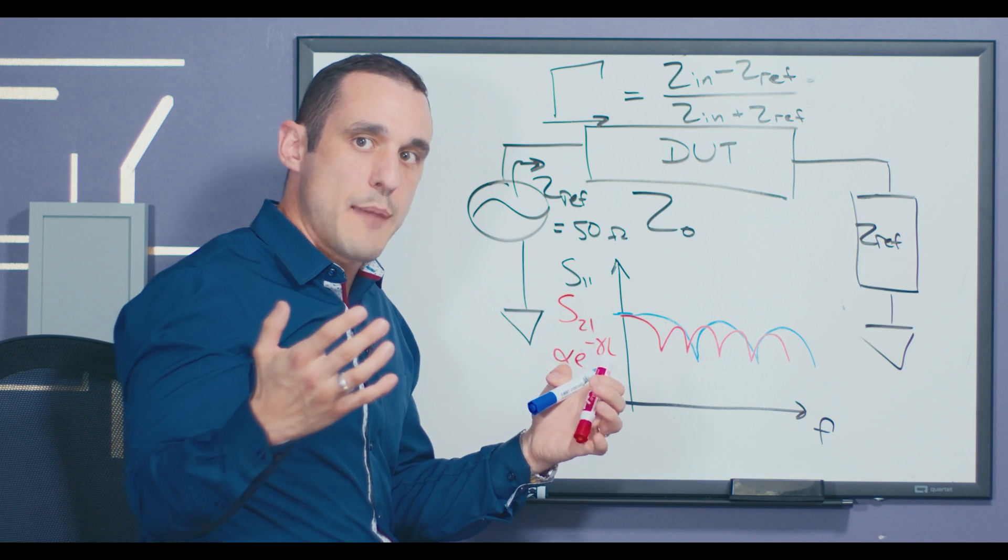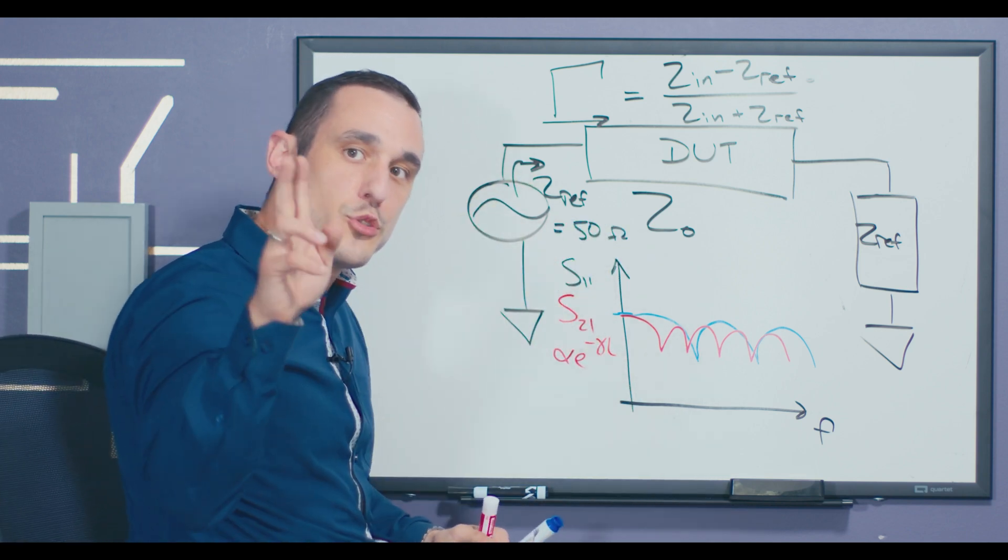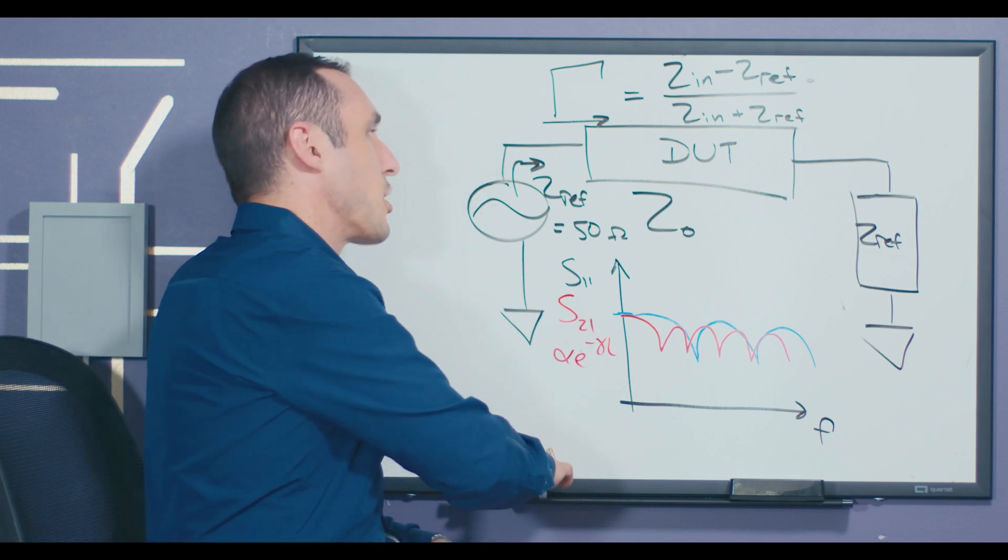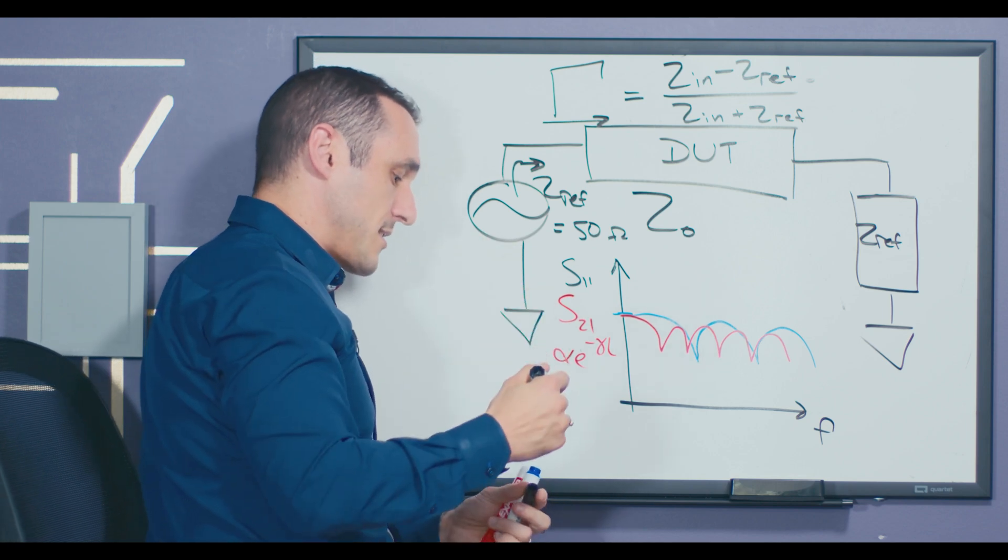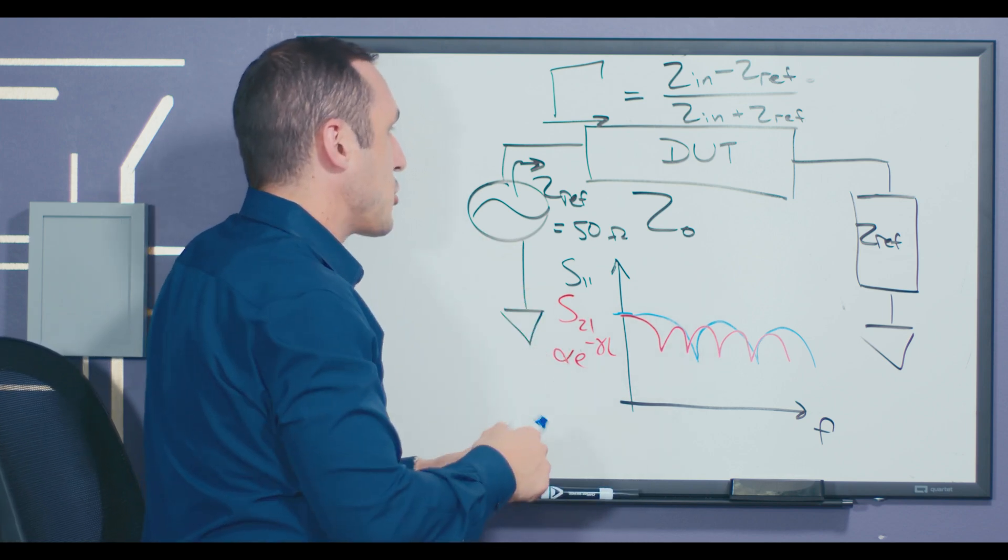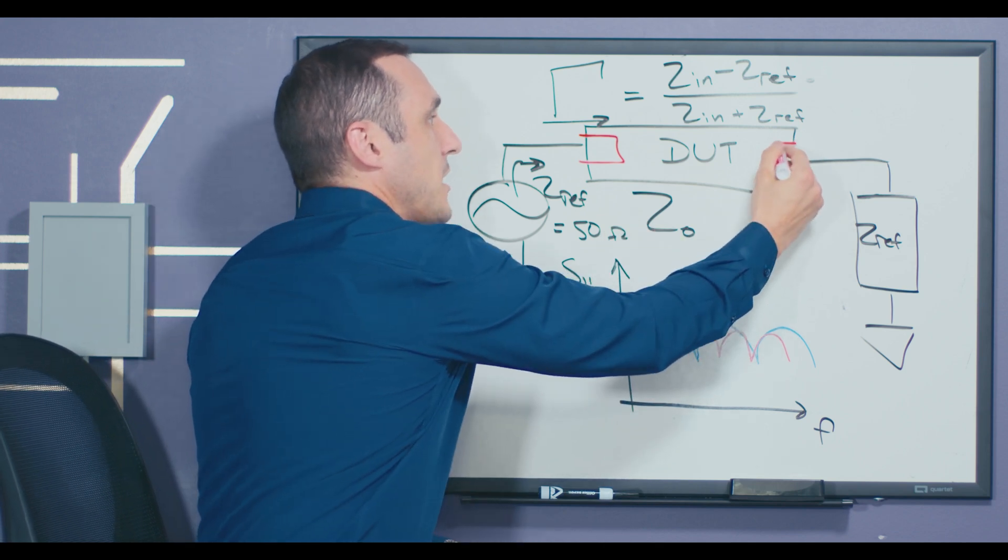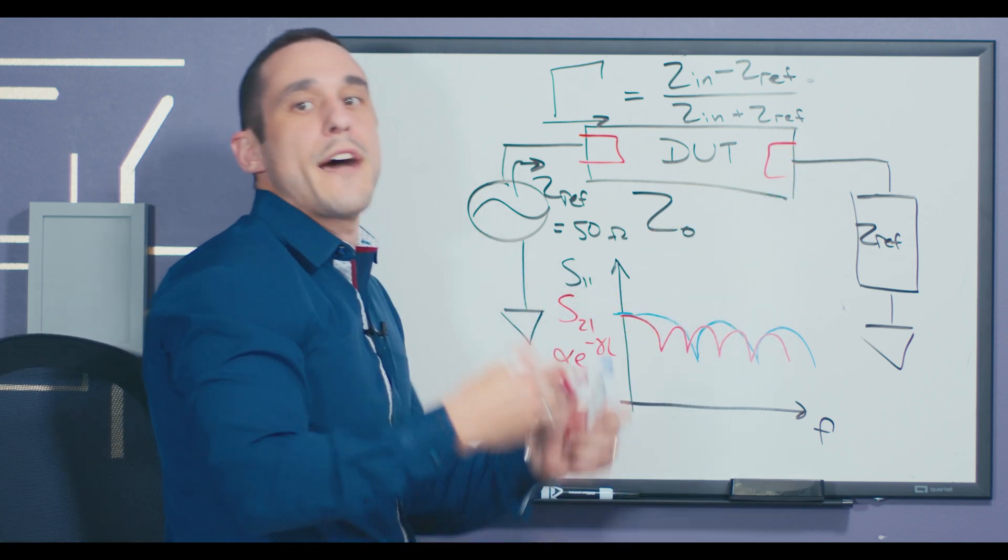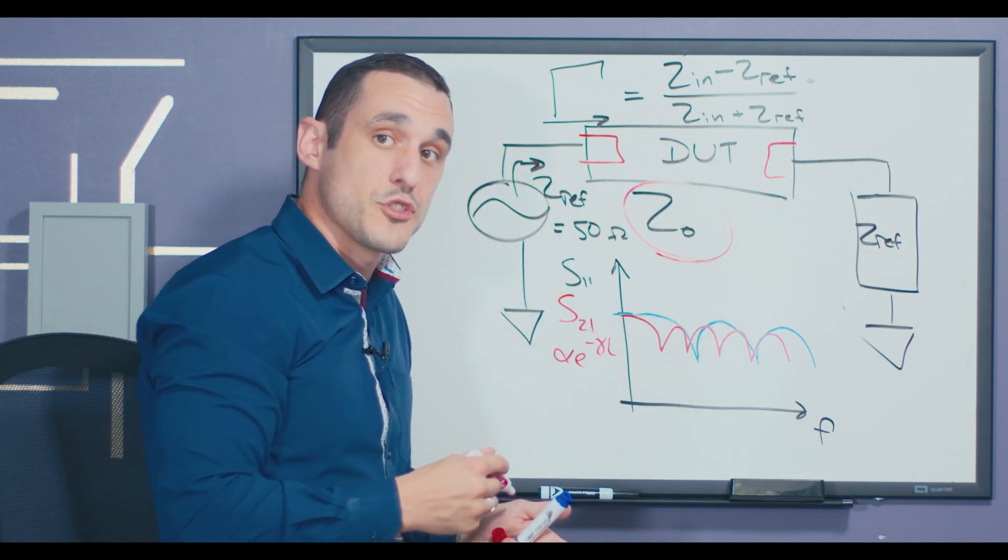Now, in order to do this type of measurement properly, you have to notice here that we actually have two other circuit elements that really determine the impedance looking into this interconnect. Because it's not just the DUT, it's actually also a connector right here, and then a connector right here.